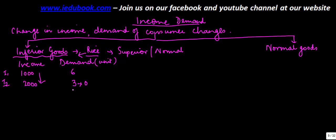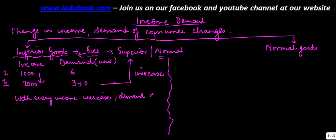And my demand of the superior good or the normal good will increase. Why? Because I don't have any more budget constraints, I don't have any money constraints to buy the normal goods. So if there is an inferior good, with every income increase, demand decreases.